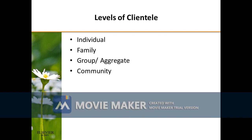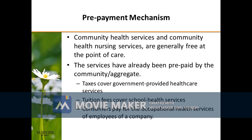The four levels of clientele of community health nursing are: individual, family, group, and community. Community health services and community health nursing services are generally free at the point of care, as the services have already been prepaid by the community. For example, taxes cover government-provided health care services, tuition fees cover school health services, and consumers pay for the occupational health services of employees of a company.